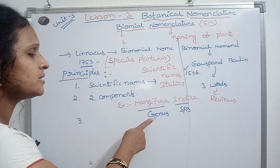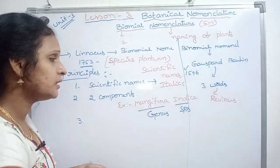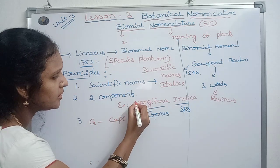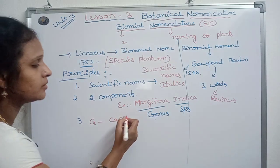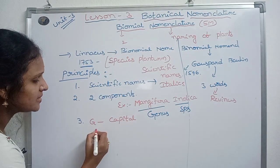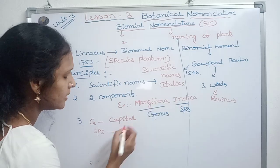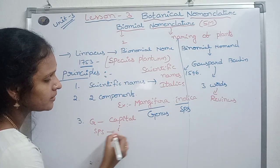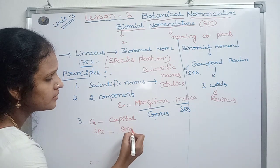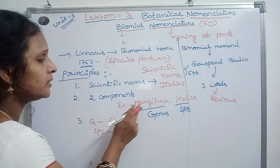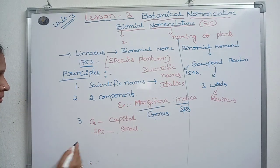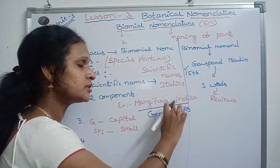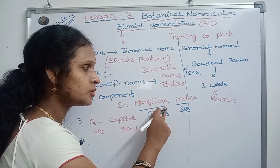Third point: genus is always written with capital letters. The species name is written in small letters. Between these two words, maintain a gap.